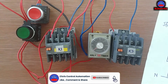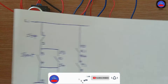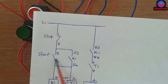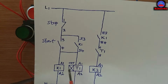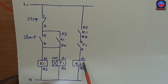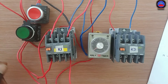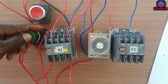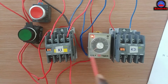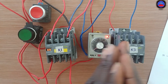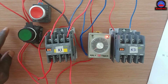Alright engineers, this is the complete wiring. Let me explain the operation once again: when I press the start push button, K1 and the timer both energize, the timer counts, and after the preset time K2 energizes. Let's demonstrate — I'm pressing the start push button now. You can see K1 and the timer are energized. After the preset time, Contactor 2 comes on — you see that! They started in sequence.